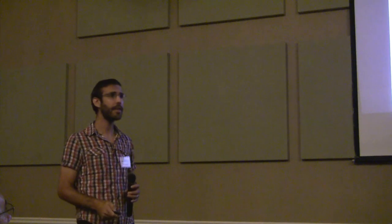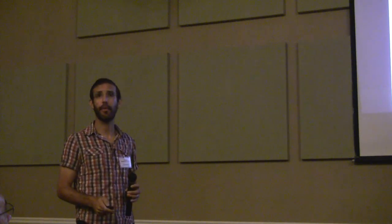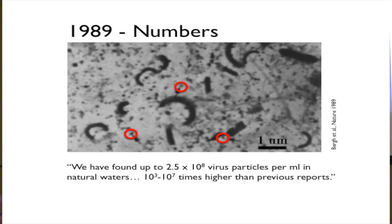Something happened. The question arose: how many phage or viruses are in a natural environment? This is an electron micrograph from a paper by Berg et al. in Nature 1989, from lake water. Everything has been stained, so anything with DNA appears here. There's a scale bar of one micron; these little dots are about 50 nanometers in diameter. Berg et al.'s idea was that these were actually viruses — formerly called virus-like particles. They found over 100 million virus particles per milliliter, 1,000 to tens of millions times higher than previous culture-based reports.